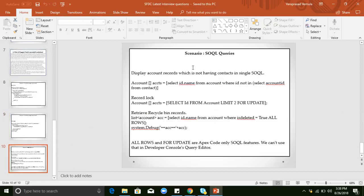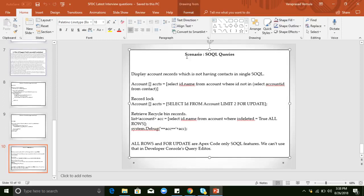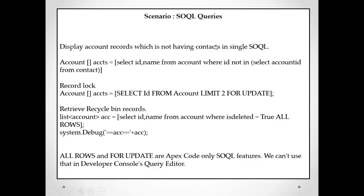In this video we will discuss some sample scenario-related Salesforce SOQL queries. These are sample questions that interviewers ask nowadays, like: write a sample query on the Account object — accounts which are not having contacts, or which are having contacts — in a single SOQL query. We need to write accounts which are having contacts or which are not having contacts. For example: display accounts which are not having contacts in a single SOQL query.